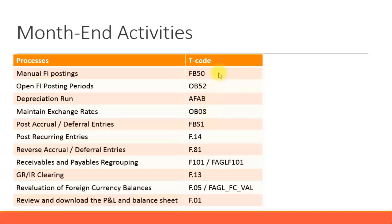For FI posting activities, for general journal entries you can use FB50, or for other common journal entries you can use the standard FB01 transaction code. You also need to open and close FI posting periods to ensure that when you're in the new month the previous period is closed. You can set up a separate authorization group so only a few users can post to previous periods.